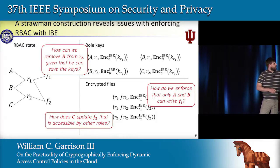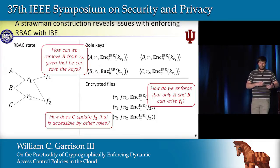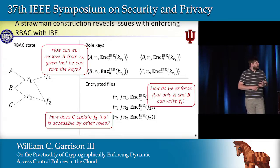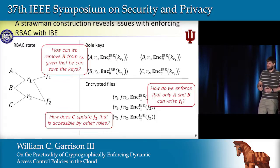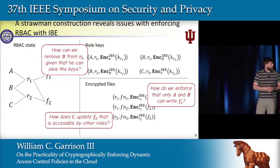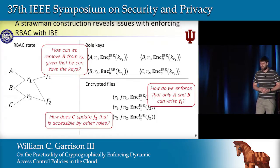And finally, how do we revoke B from role R2—how do we take accesses away—given that this user's likely caching these keys locally? B could be saving the private key for R2 on his machine. How do we revoke accesses, given that that's a possibility?